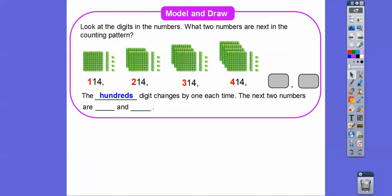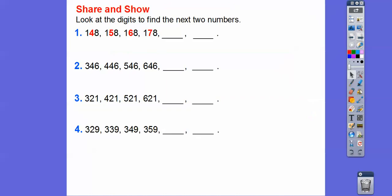So the hundreds digits change by one each time, so the next two numbers are 514 and 614.